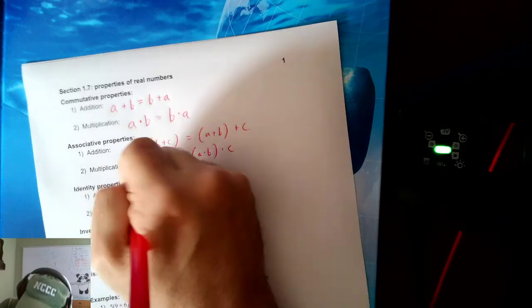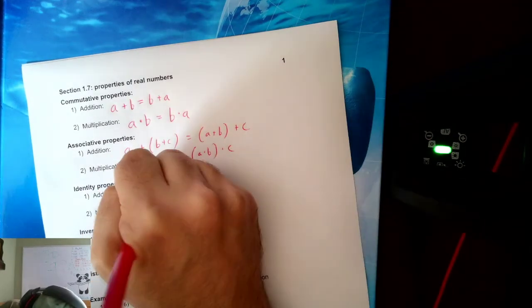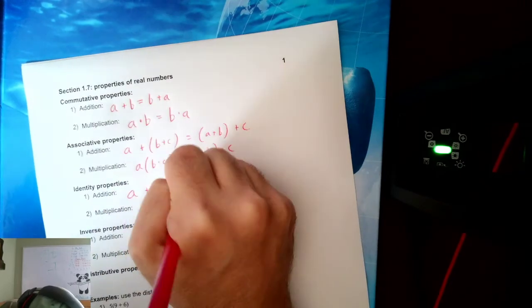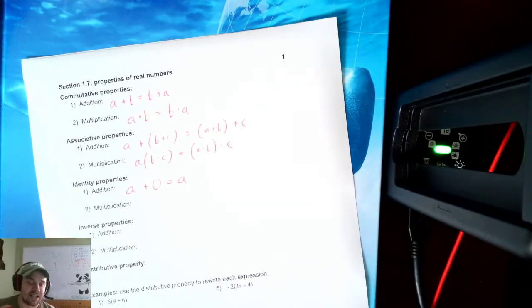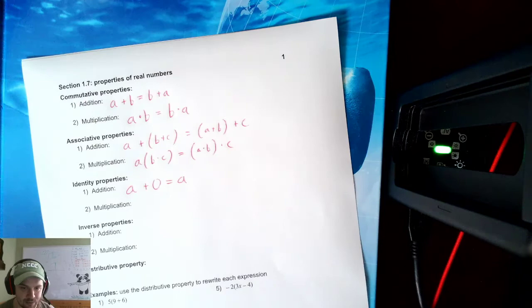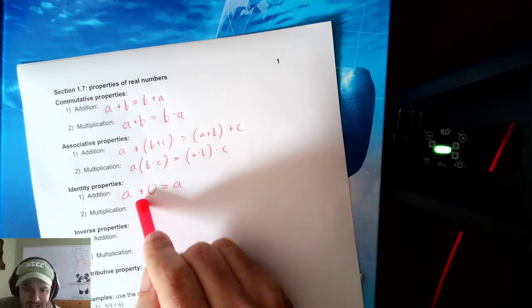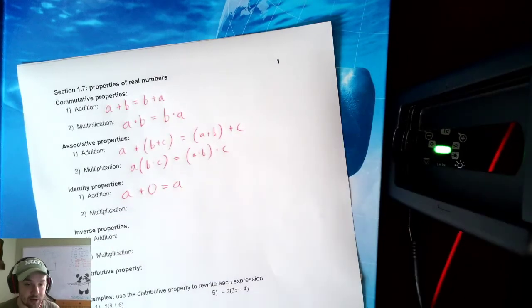Now identity, in addition, if I take a plus 0, that spits back out a. That's called the identity property because there's a number that you can add without changing what you started with.